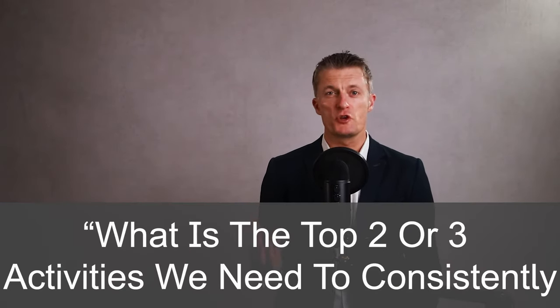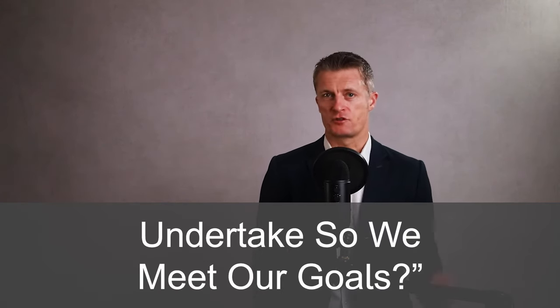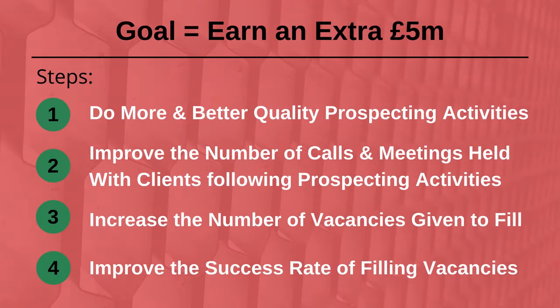An example of the question you might ask when developing KPIs is: what are the top two or three activities or projects we need to consistently undertake so we meet our goals and deliver the financial results needed? In a straightforward example, the goal is to drive an extra five million in sales at a recruitment company. The steps could be: first, to do more and better quality prospecting activities; second, improving the number of calls and meetings held with clients; third, increasing the number of vacancies given to fill by clients; and fourth, improving the success rate of filling those vacancies. Measuring employee performance through these four stages and improving it will help you earn the extra five million targeted.